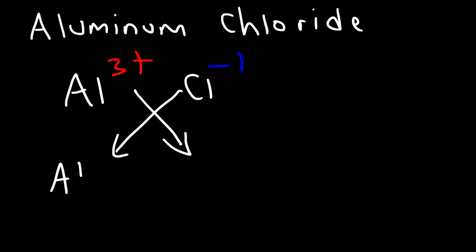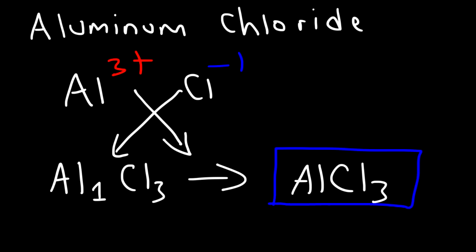So this is going to be Al1Cl3. Now there's no point in writing a subscript of a 1, so in this case, we can just omit the 1 and say AlCl3. It turns out that this is the correct chemical formula for aluminum chloride.